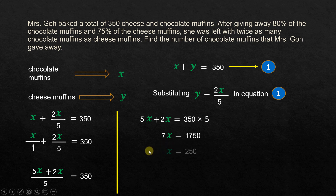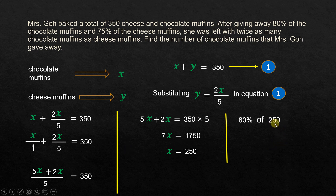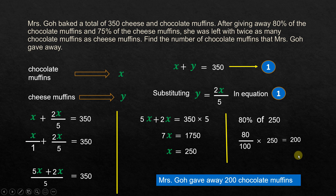X is the total number of chocolate muffins, but she only gave away 80% of them. So we find 80% of 250: that is 80 over 100 times 250. Cancelling the zeros gives 8 times 25, which equals 200. So Mrs. Goh gave away 200 chocolate muffins.